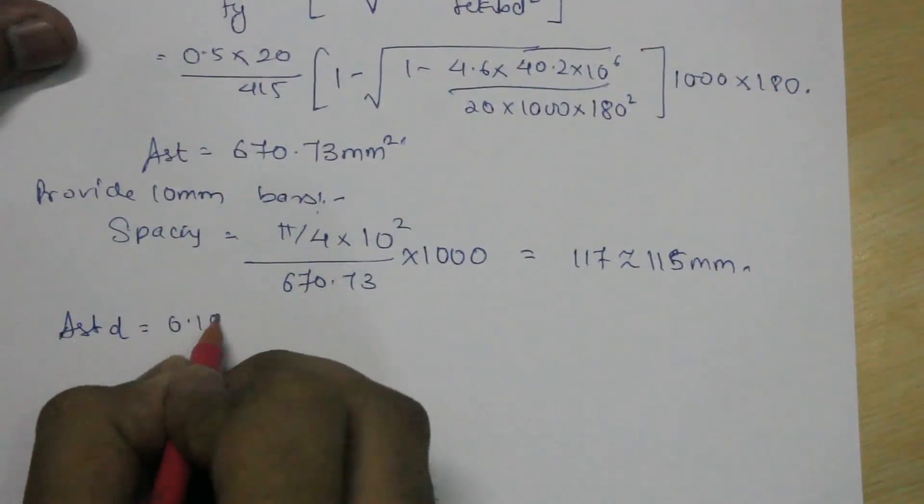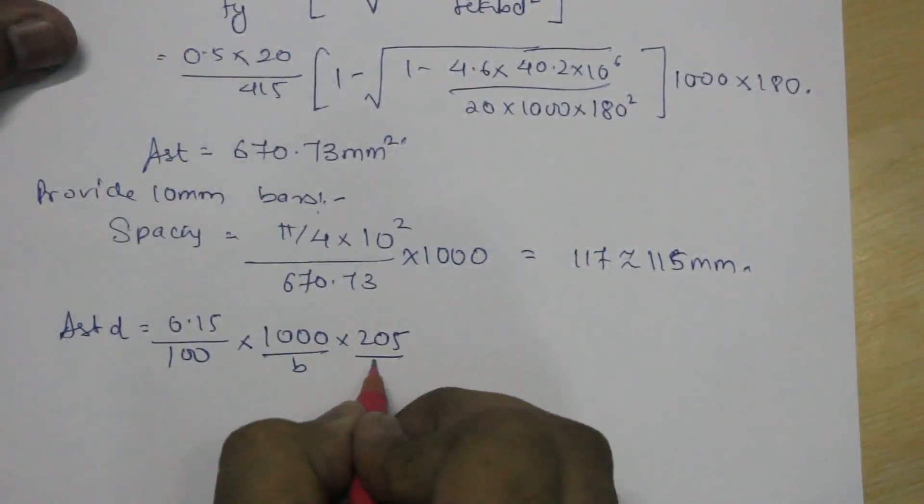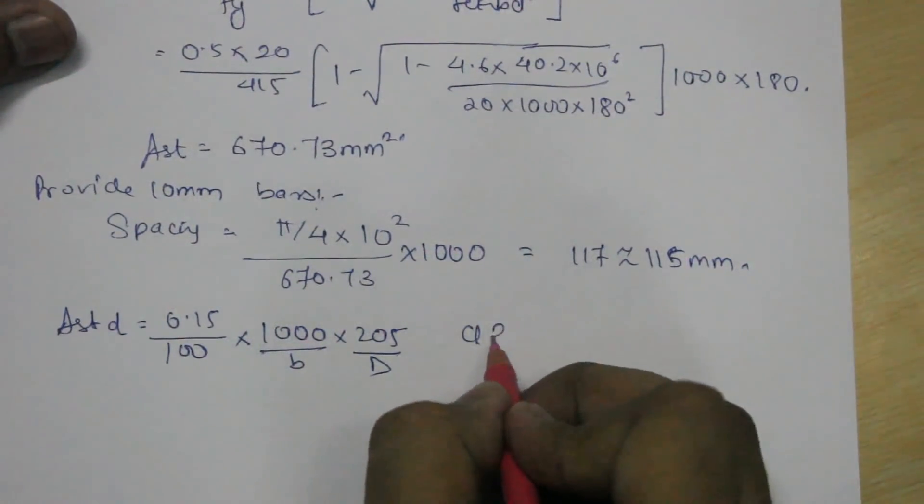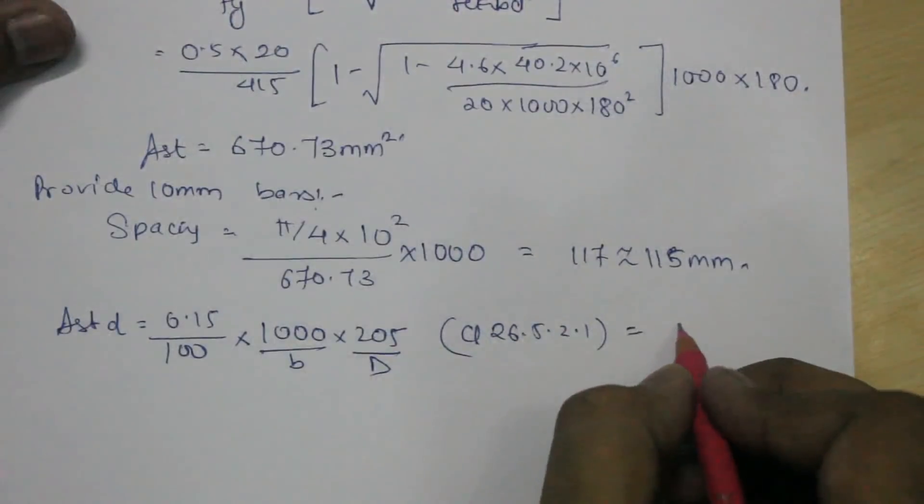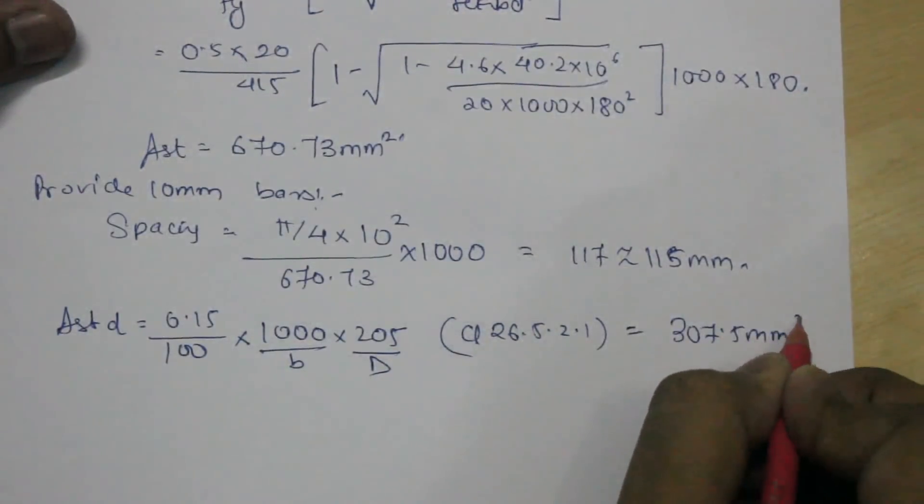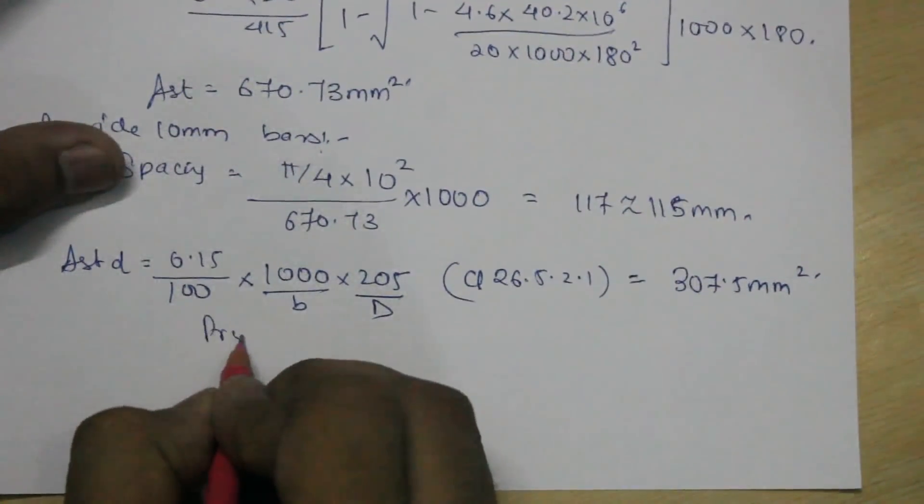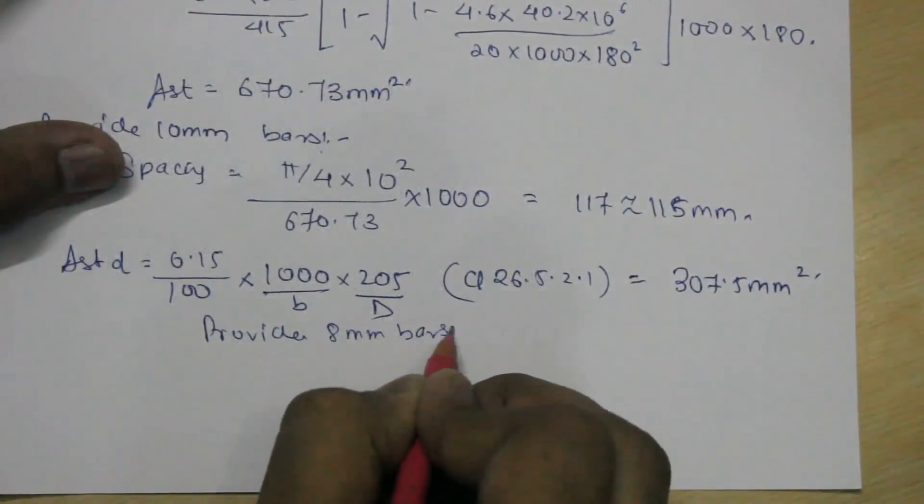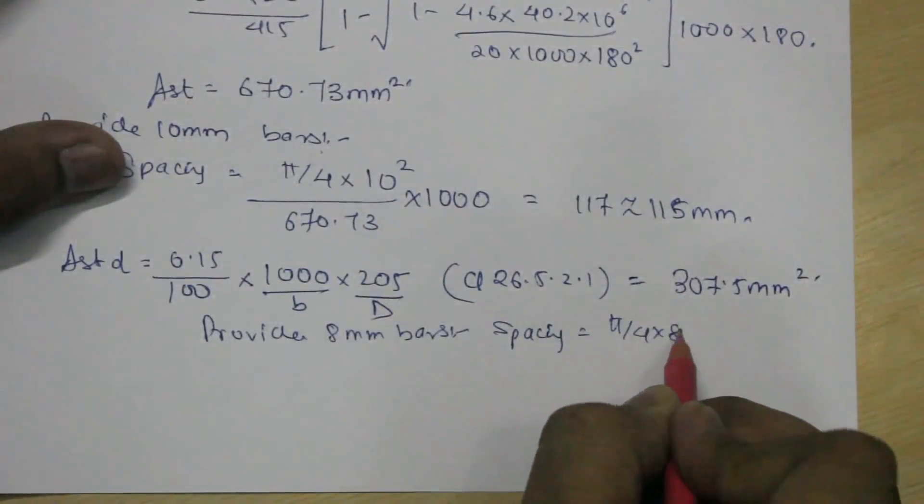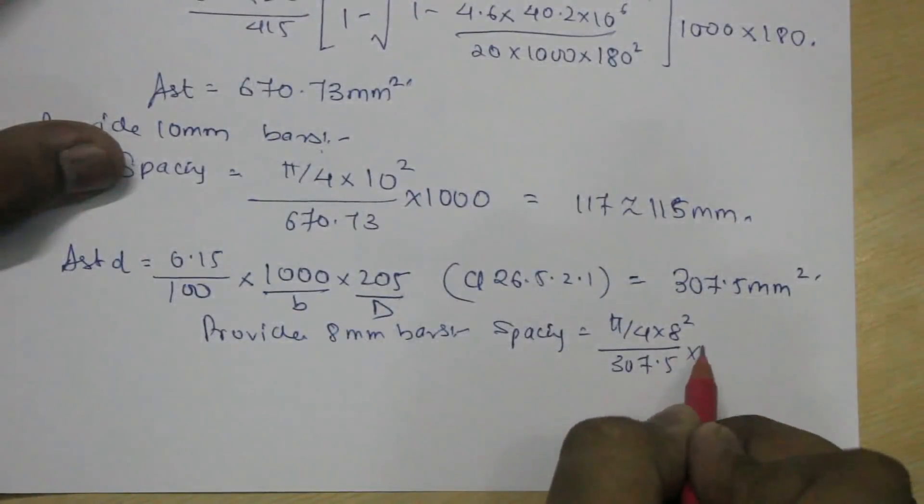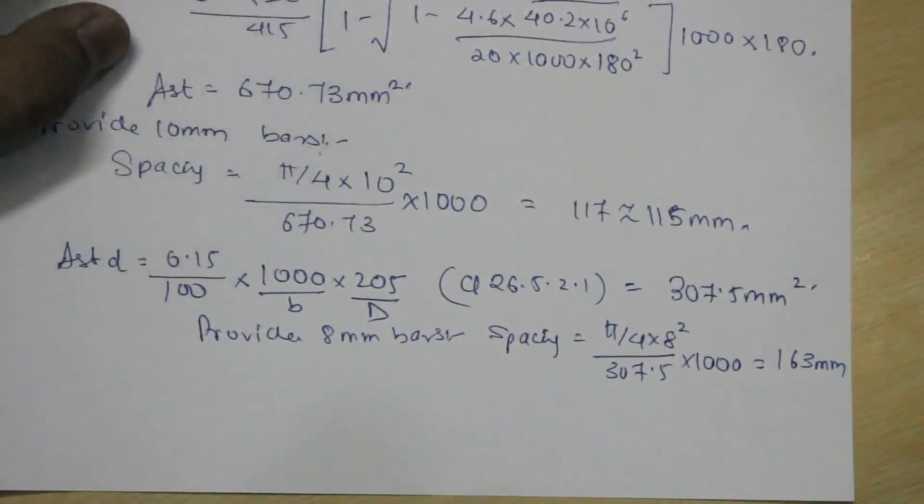Then provide the area of distribution steel, which is 0.15 by 100 into 1000 into 205. This is B and this is capital D. This is given in clause number 26.5.2.1, which is for minimum steel for Fe415. So you get it as 307.5 mm square. Again, now you can provide 8 mm bars, so your spacing would be pi by 4 multiplied by 8 square upon 307.5 into 1000. You get it as 163 mm. You can also provide the check for spacing for maximum spacing.